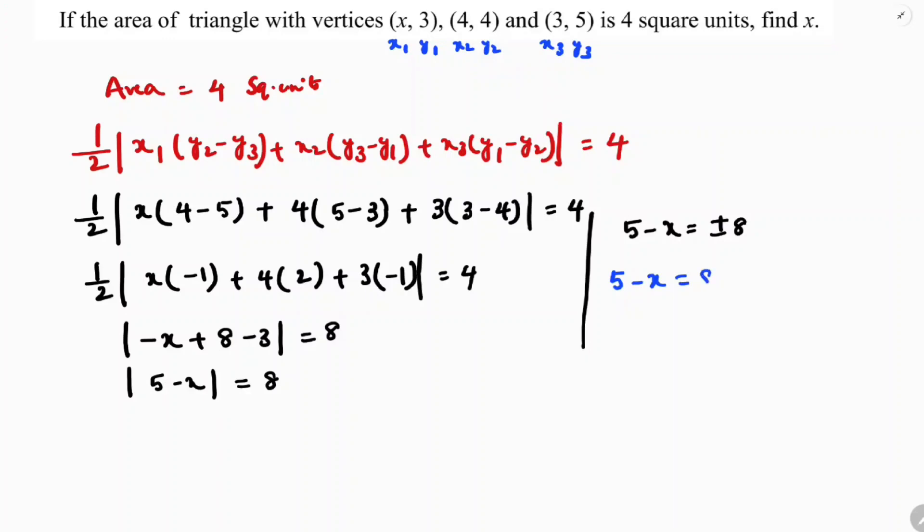First case: 5 - x = 8. So -x = 8 - 5, which gives -x = 3. Therefore x = -3.